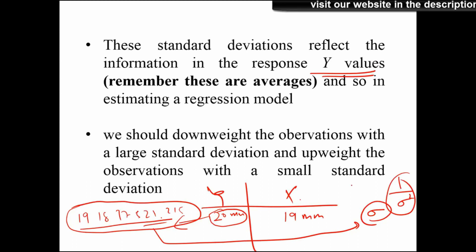The weight is the reciprocal of the variance. We can easily find the weight and use that in the weighted least squares formula, which is (X'WX)⁻¹ times another expression to find the beta values. Not always will you have this experimental data where you have several observations to calculate the standard deviation and variance. The idea is to down-weight observations with large standard deviation.